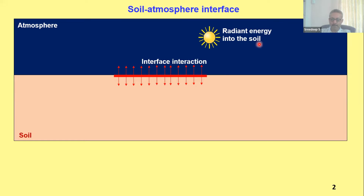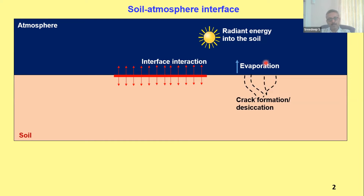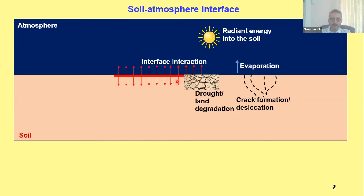The radiant energy that happens because of temperature is one particular aspect, and that is related to evaporation. The problem associated with evaporation is excessive desiccation. Excessive desiccation and crack formation has got its engineering impacts, and there has to be specific treatment based on which we can suggest certain solutions. A cracked soil is prone to more erosion, and whenever there is excessive rainfall, the amount of water that gets in will try to dislodge these particles more. This is the offshoot of problems like drought and land degradation in general.